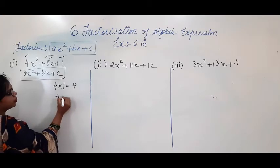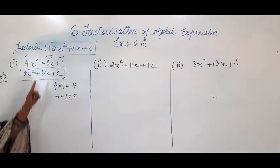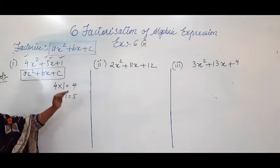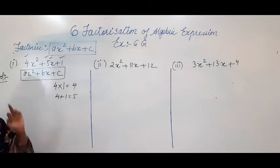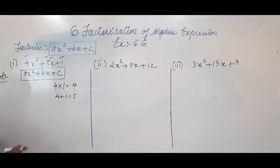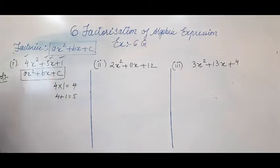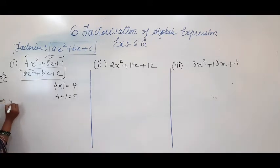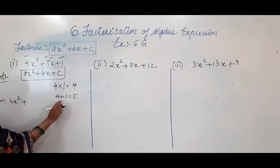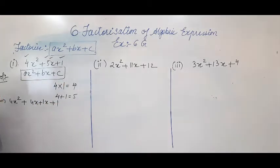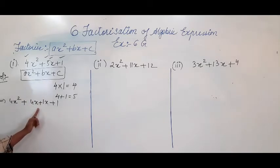If I write 4 + 1 = 5, I am getting the middle term. So the first process is: multiply the first term and the last term, and after that find out those factors by which adding or subtracting you get the middle term. I got 4 × 1, and 4 + 1 = 5, which satisfies. Now write down 4x² + 5x as 4x² + 4x + 1x + 1. I have split the middle term 5x into 4x + 1x.